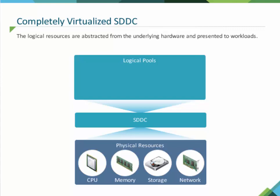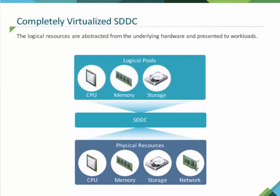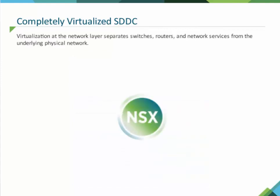The logical resources — such as logical CPU, memory, storage, and network I/O — are abstracted from the underlying hardware and presented to workloads. Virtualization at the network layer separates switches, routers, and network services from the underlying physical network. The network virtualization platform of VMware is VMware NSX, which we will discuss in detail in a moment.